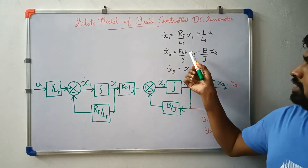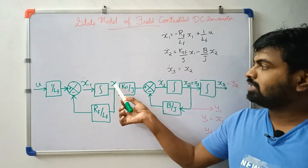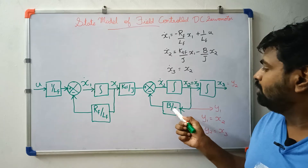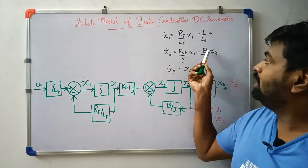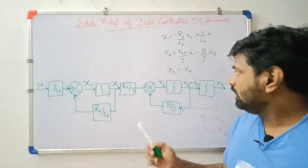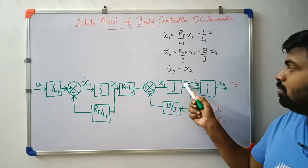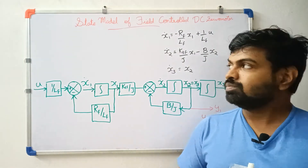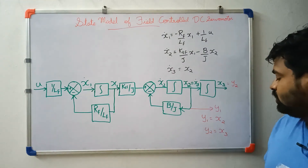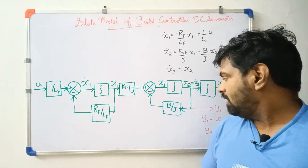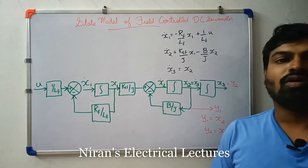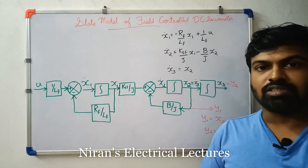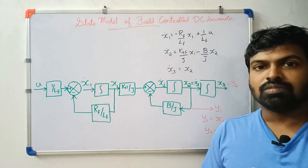The second equation has ktf/j into x1 and minus b/j as feedback, giving negative feedback for x2_dot. Then x3_dot equals x2. The outputs are y1 equal to x2 and y2 equal to x3. This completes the block diagram for the field-controlled DC servomotor state model.